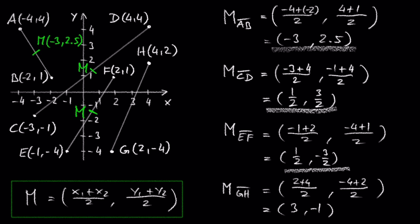So, the midpoint of point G and point H is 3, comma negative 1.